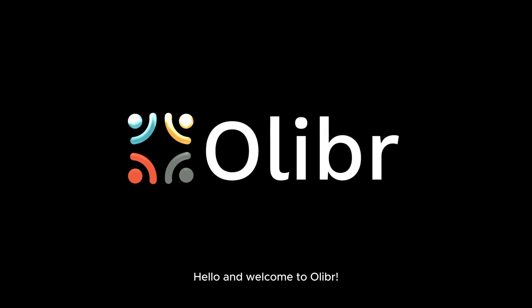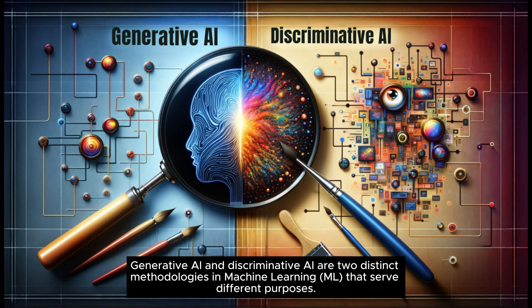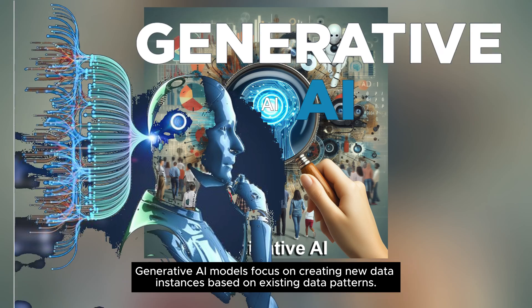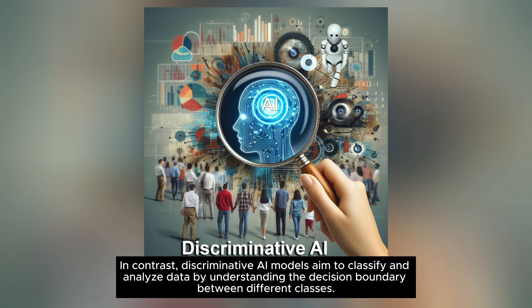Hello and welcome to Olibr. Generative AI and discriminative AI are two distinct methodologies in machine learning that serve different purposes. Generative AI models focus on creating new data instances based on existing data patterns. In contrast, discriminative AI models aim to classify and analyze data by understanding the decision boundary between different classes.